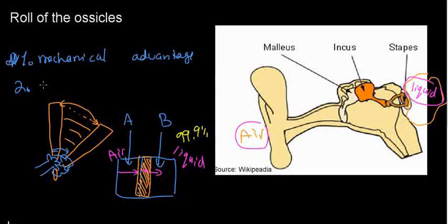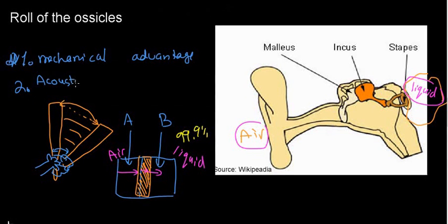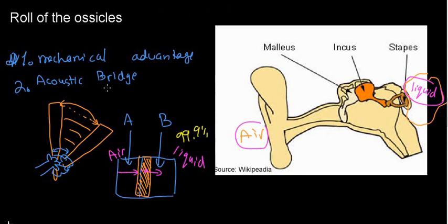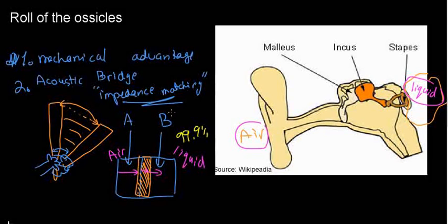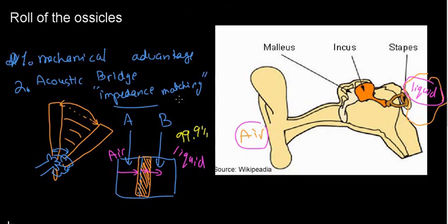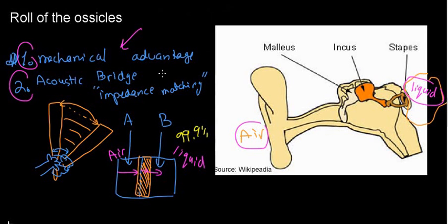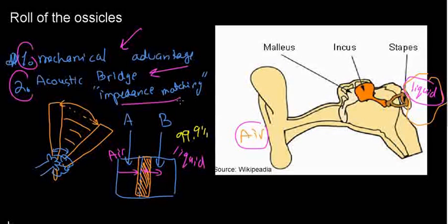The solution is to have some material in the middle that acts as an acoustic bridge — something with an acoustic impedance that can bridge the gap between air and liquid. Instead of air and liquid interacting directly and losing most of the energy, they interact via the bone tissue of the ossicles. The ossicles are therefore an acoustic bridge, or more precisely, they perform impedance matching — which is the actual term for this phenomenon.